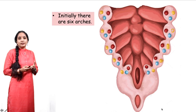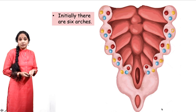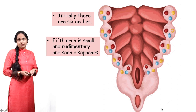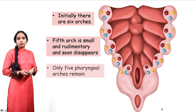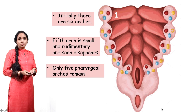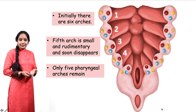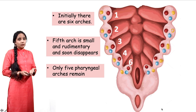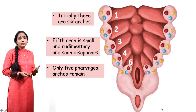Initially there are six arches, but the fifth arch becomes rudimentary and eventually disappears. So there are only five arches total, but they are numbered according to their origin — 1, 2, 3, 4, and 6, not 1 through 5.